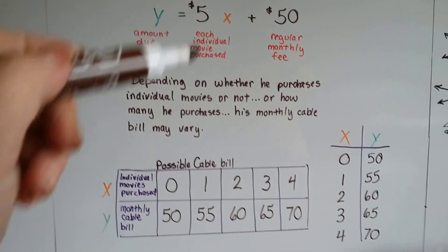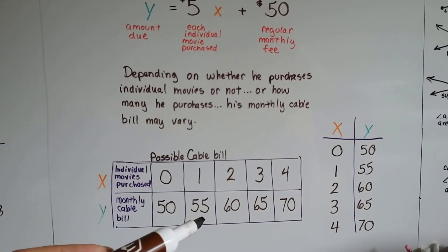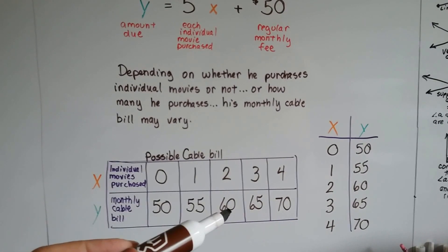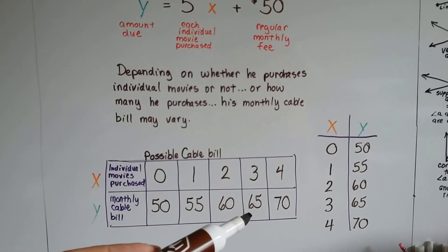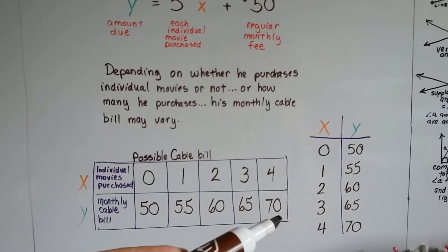We can look at this equation. If he purchases one movie, his bill is now going to be $55. If he buys two movies, it's going to be $60. Three movies, it's going to be $65. And four movies, his bill is now going to be $70.